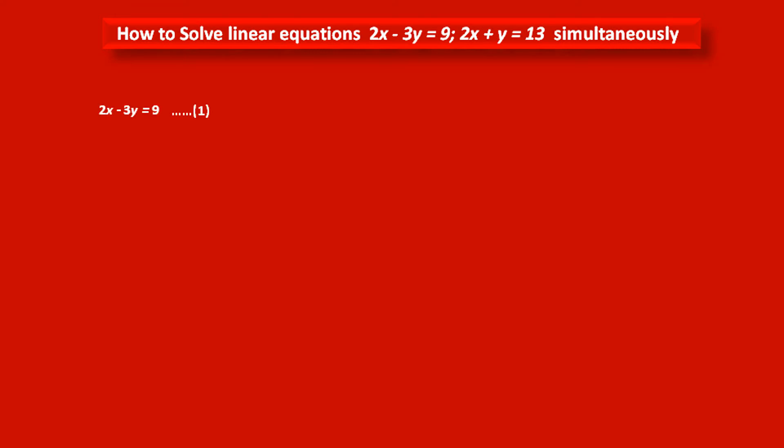First equation is given: 2x minus 3y equals 9. Let us consider it as equation number 1. Second equation is given: 2x plus y equals 13. Let us consider it as equation number 2.